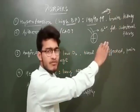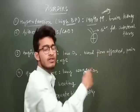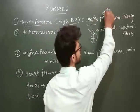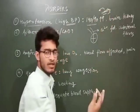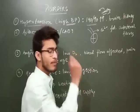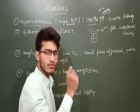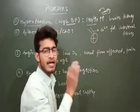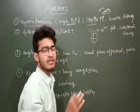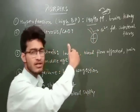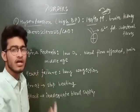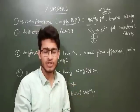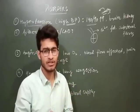Hg in chemistry, we know, is the symbol of mercury, and mm is millimeter. So when the pressure of mercury is 140 and 90 mmHg, that is the condition where Hypertension occurs — 140/90 mmHg. That is basically Hypertension.